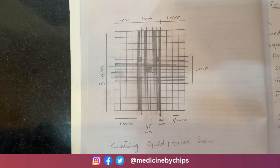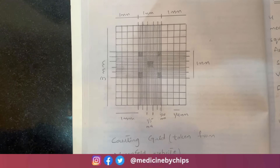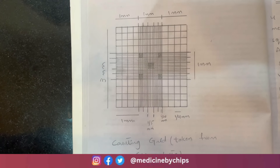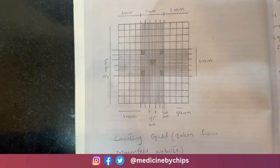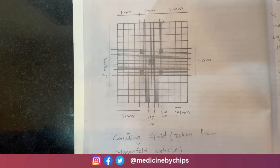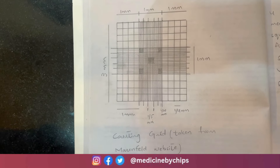This is the view you will get in the light microscope when you view the Neubaur's chamber at 10x. We have a group of smaller squares and a group of bigger squares.